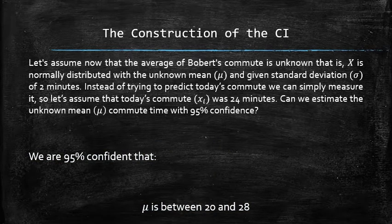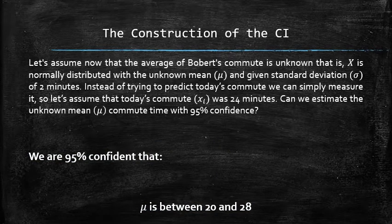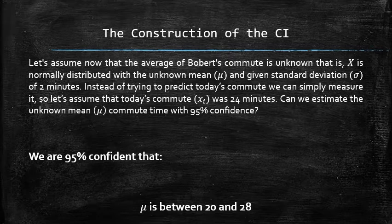As a result, we obtain a 95% confidence interval for the unknown mean commute time based on a single random observation.